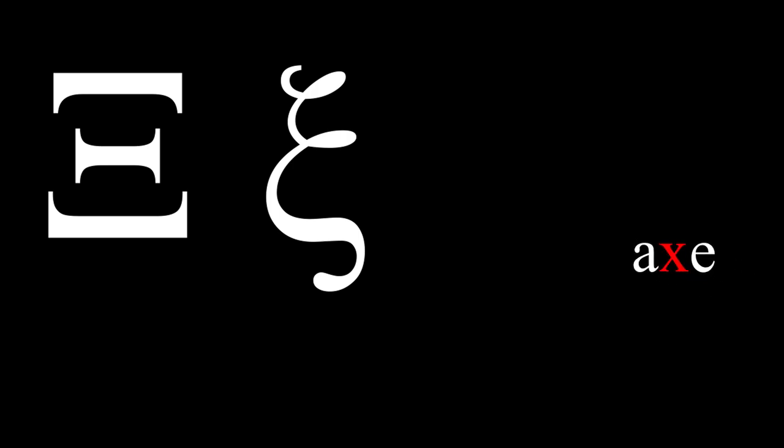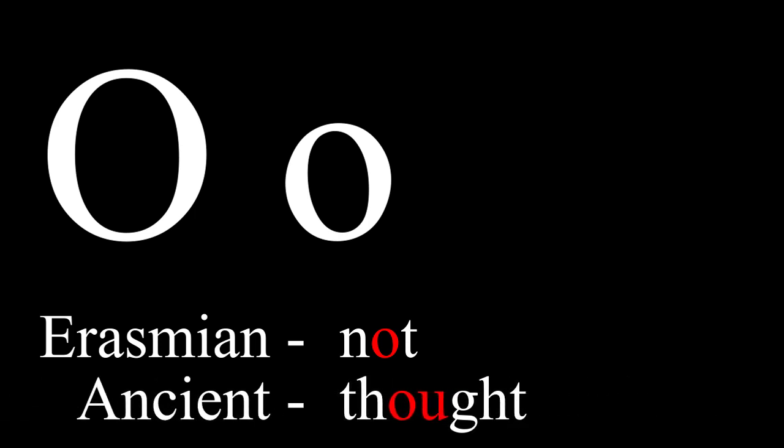Xi has an x sound, specifically a 'ks' sound, pronounced like the x in 'x.' Omicron is always a short vowel. In Erasmian pronunciation, it is pronounced like the o in 'not.' In ancient pronunciation, it is pronounced like the 'ou' in 'thought.' The next letter is pi, pronounced like the English letter p, as in 'pill.'